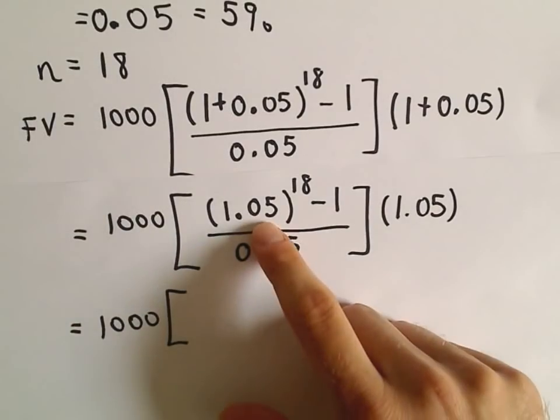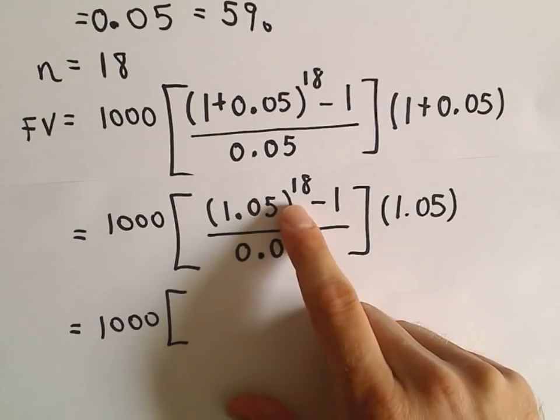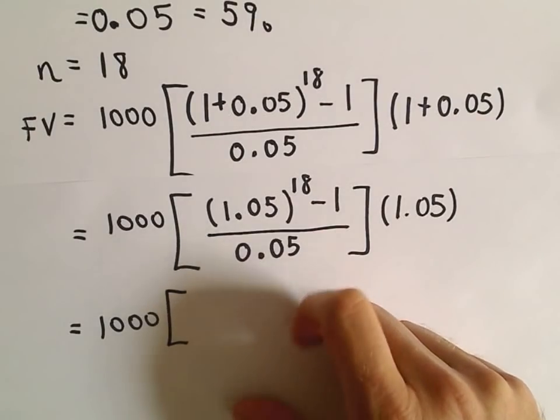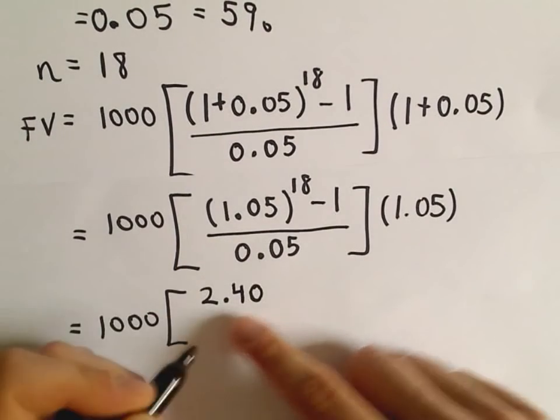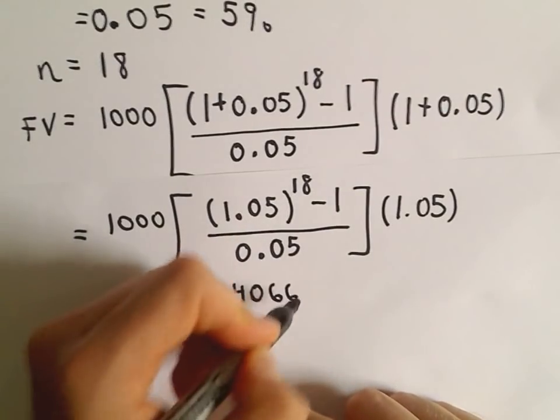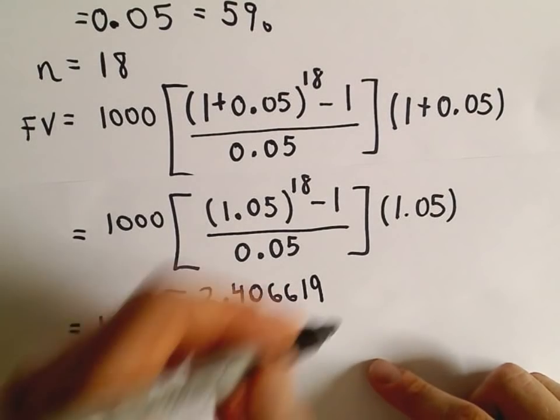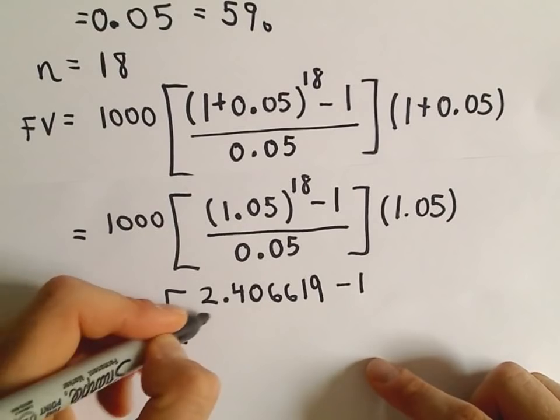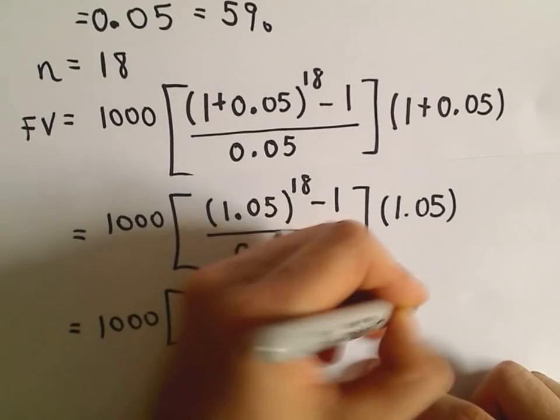So the first thing I'm going to do, we have to do exponents first. So I've got my little handy dandy calculator kind of off here to the side. Certainly can't do this in my head. So 1.05 raised to the 18th power, I'm getting this to be 2.406619. So again, I'm estimating at this point a little bit.